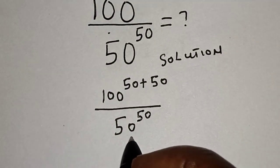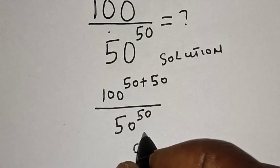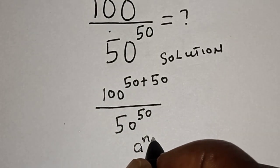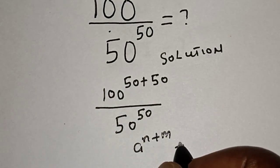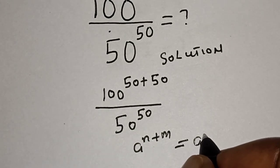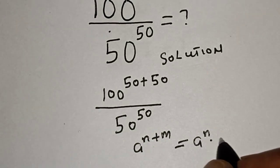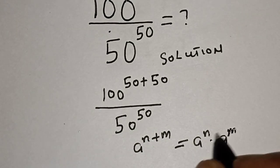Take note of this rule: A raised to power N plus M is equal to A raised to power N, multiplied by A raised to power M.